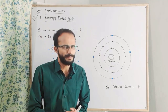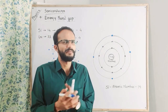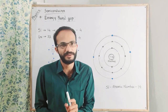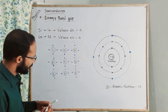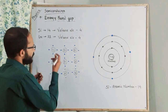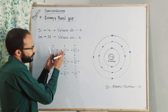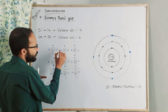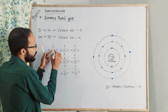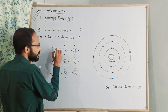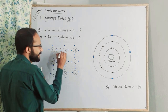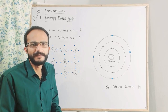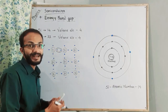At zero Kelvin temperature, each silicon atom is combined with other silicon atoms. How are they combined with each other? How do they form a bond? This is the forming of covalent bonds. Each silicon atom is going to bond with neighboring atoms through covalent bonding.